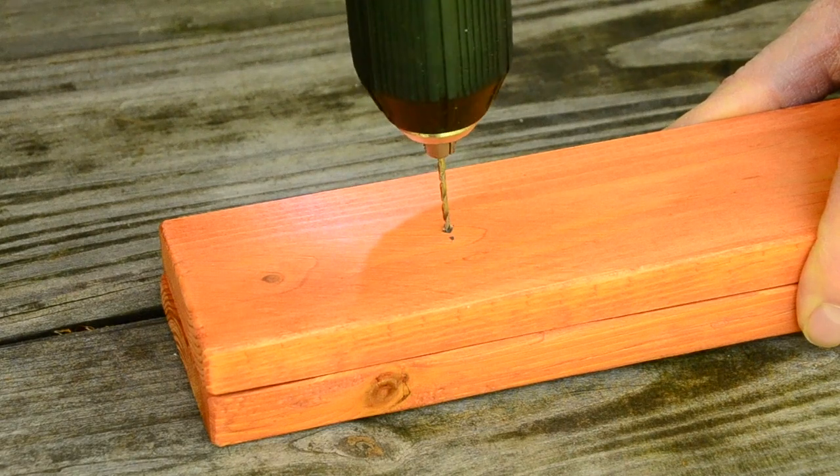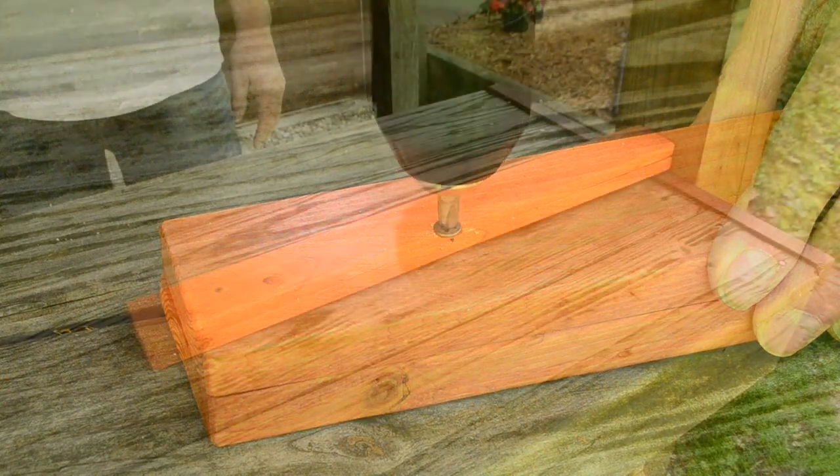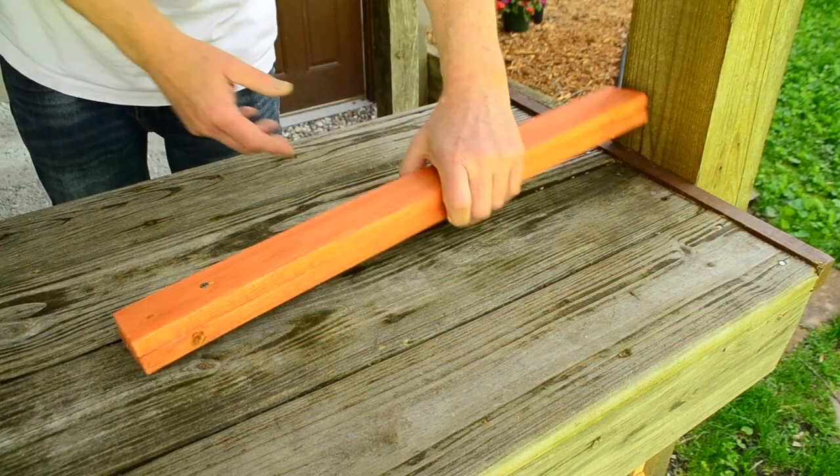Drill a pilot hole for the screw. I used a sixteenth of an inch bit. Then put one of the shorter screws in each hole. Now I will turn it around and do the other end.